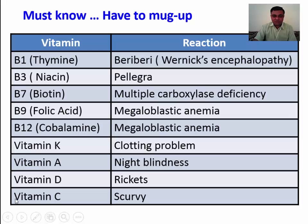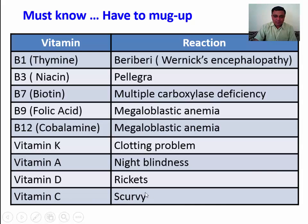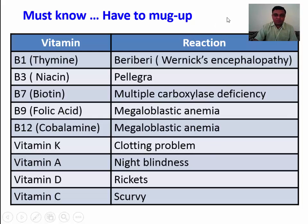Vitamin A is important for vision, as we all know. The sources of vitamin A are papaya, mango, and all colored fruits. Vitamin D deficiency causes osteomalacia or rickets. Vitamin C deficiency causes hemorrhages in the body, such as in gums and joints, and is known as scurvy. These two tables are very important for solving questions related to vitamins.